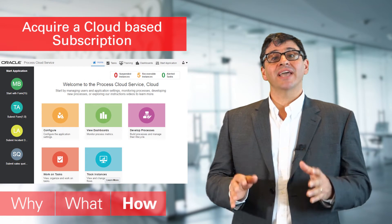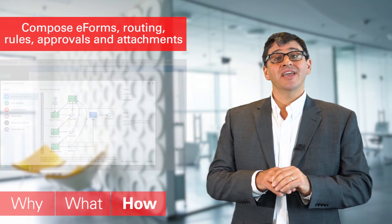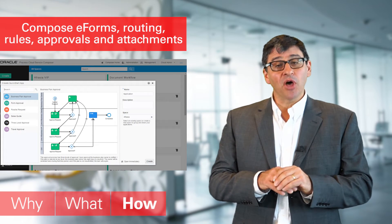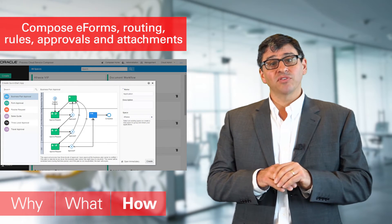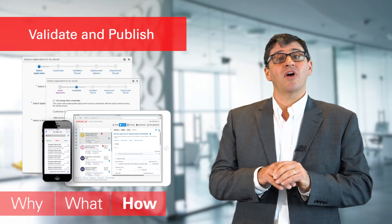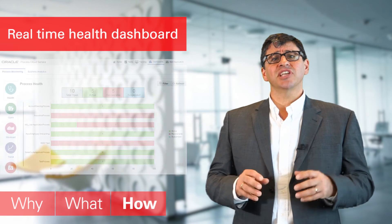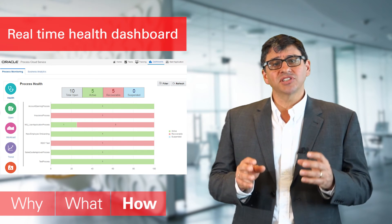How does it work? There are four steps. As a business owner, you go off and acquire your cloud-based subscription for Process Cloud. Two, as the process owner, you're then able to visually compose and create your process with e-forms, workflows, approvals, and attachments. Three, once validated, you're then able to publish and you can see your process being used via the many channels. And then finally, as a business owner, you're able to see in real-time how and where your processes are being used with your Process Health Dashboard.